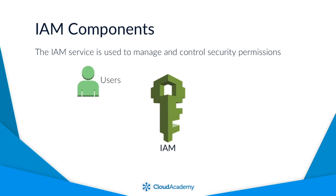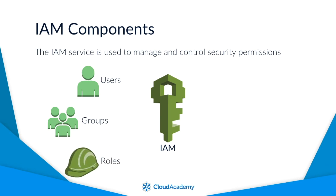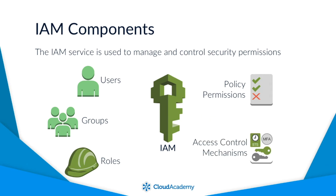Users are objects within IAM identifying different users. Groups are objects that contain multiple users. Roles are objects that different identities can adopt to assume a new set of permissions. Policy permissions are JSON policies that define what resources can and can't be accessed. And access control mechanisms are mechanisms that govern how a resource is accessed.